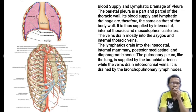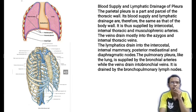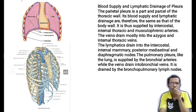Blood supply and lymphatic drainage of the pleura: the parietal pleura, being part of the thoracic wall, is supplied by the intercostal, internal thoracic, and musculophrenic arteries; veins drain mostly into the azygous and internal thoracic veins; lymphatics drain into the intercostal, internal mammary, posterior mediastinal, and diaphragmatic nodes. The visceral or pulmonary pleura is supplied by the bronchial arteries (same as the lung) and is drained by the bronchial veins; its lymphatic drainage is also the same as the lung, draining into the bronchopulmonary lymph nodes.